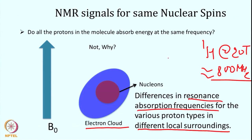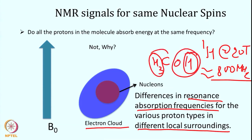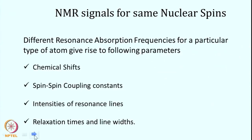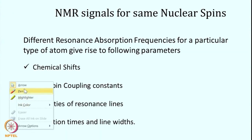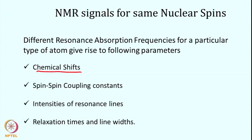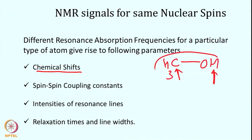The difference in resonance absorption frequency for a particular nucleus depends on its local surroundings. For example, in methanol, the proton on CH3 and the proton on OH have different local environments, so their resonance frequencies are different. This gives various important information: first, chemical shift — arising from different chemical environments at the same magnetic field; second, spin-spin coupling — these two protons are coupled through bonds and affect each other's resonance frequency.